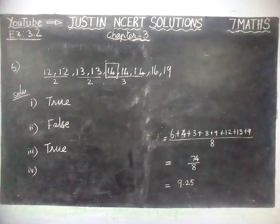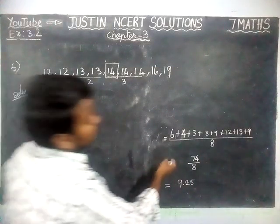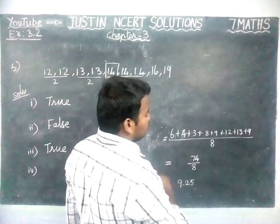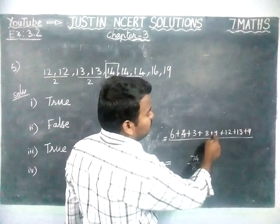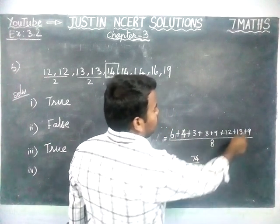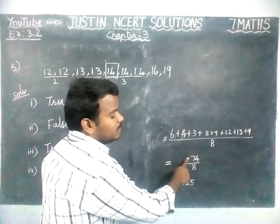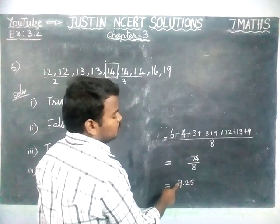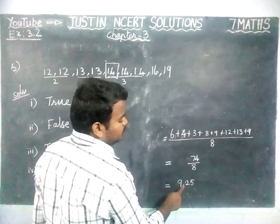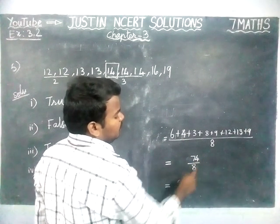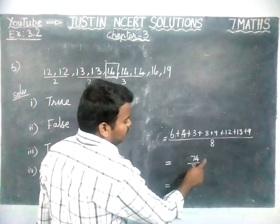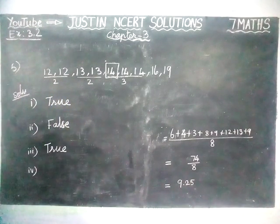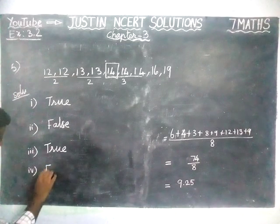Fourth question: for the given data 6 + 4 + 3 + 8 + 9 + 12 + 13 + 9, the total number of observations is 8, so we divide by 8. When we add everything, we get 74. 74 divided by 8: 8 nines are 72, remaining 2. Adding decimal: 20 divided by 8 gives 2 with remainder 4, then 40 divided by 8 is 5. So the mean is 9.25. But in the question, they have stated 9 is the mean of the given data. Therefore, that statement is false.